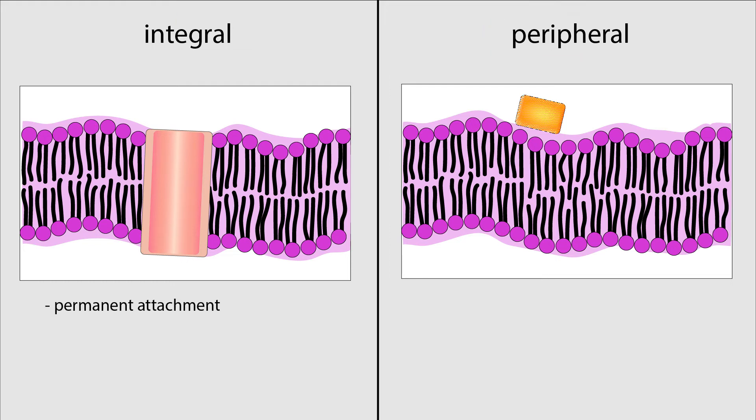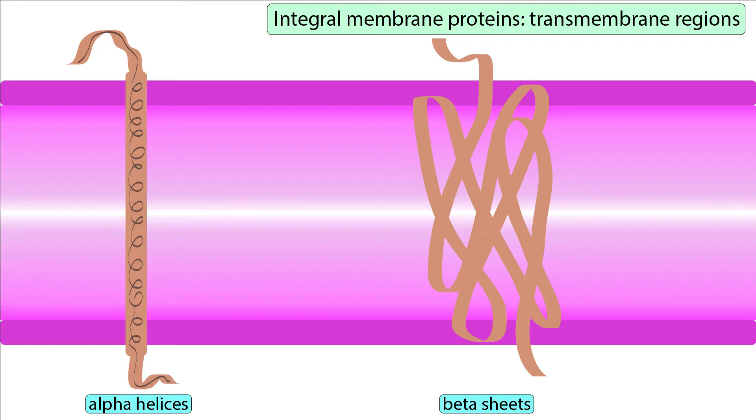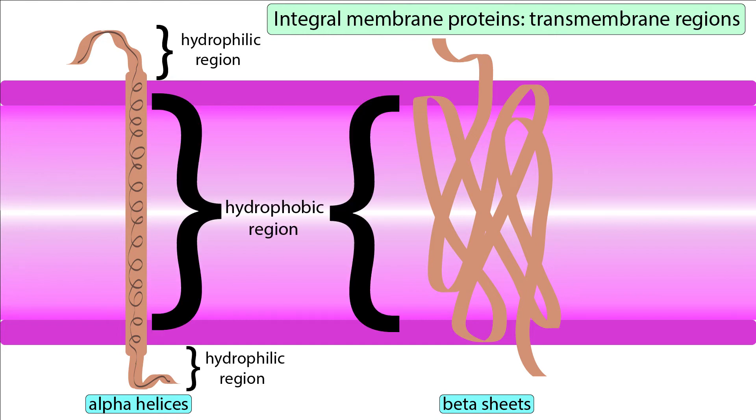Integral membrane proteins are permanently attached to the membrane and usually span across both the hydrophilic and hydrophobic layers. The transmembrane domains of these proteins are composed of either alpha helices or beta sheets, with specific hydrophilic and hydrophobic regions to match the corresponding regions in the lipids.